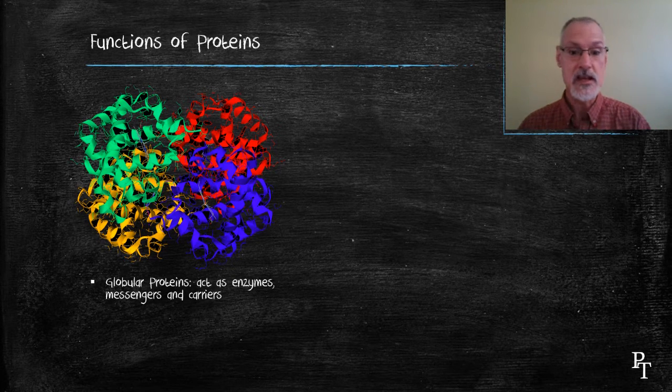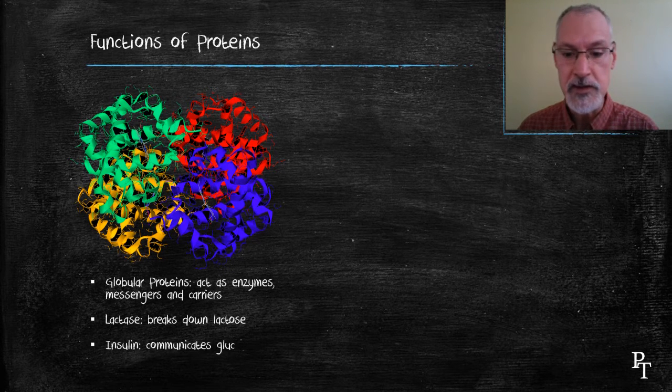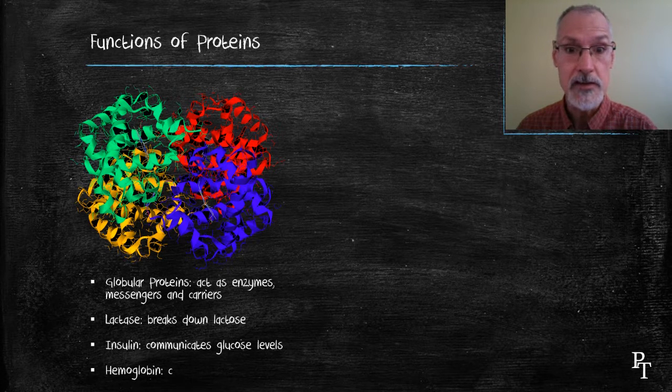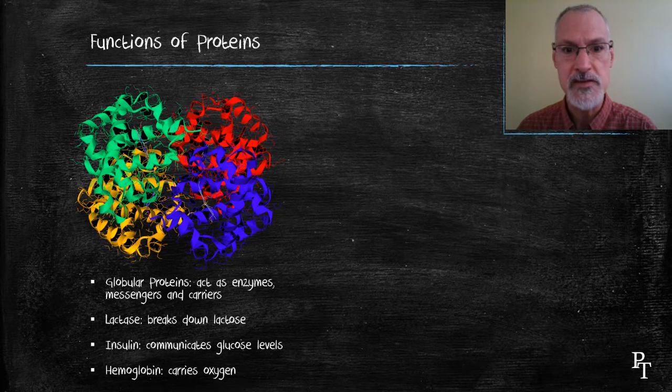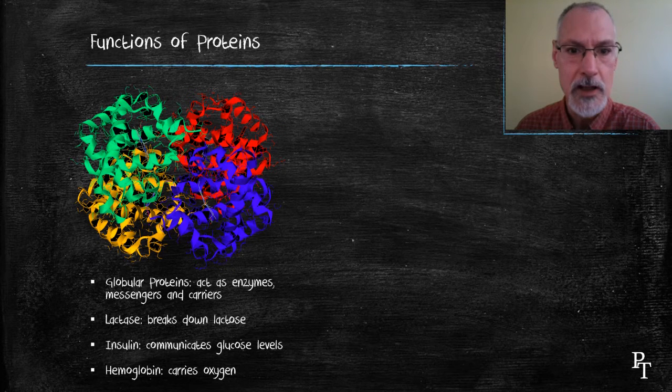Proteins can act as enzymes, messengers, and carriers. Examples include lactase, which breaks down lactose; insulin, a communicator that sends messages about glucose levels in our blood; and hemoglobin, the carrier of oxygen.